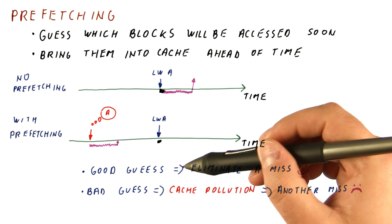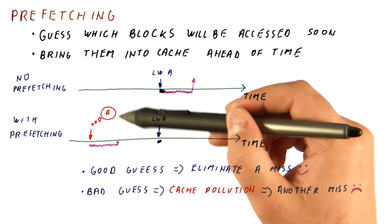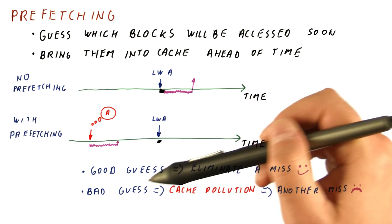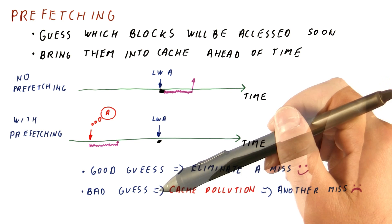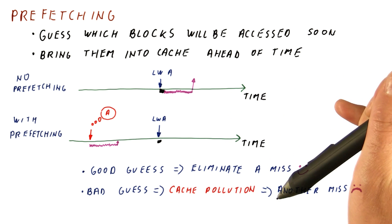And we don't like that. So overall, prefetching is about trying to make good guesses so that we eliminate misses, while trying to eliminate bad guesses because we don't want to create additional misses.